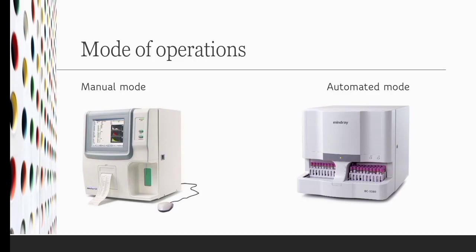In the automated mode, the technician places multiple tubes in the rack that is provided by the manufacturer, and that loaded rack is now put into the loader of the machine. By automated system, the machine will take one rack after another and it will invert each tube itself before aspirating into the probe.